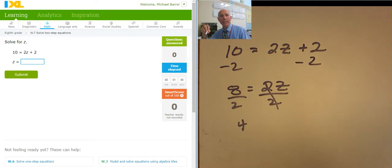What does it mean to be a solution? It means that if you plug it in, it will work. So let's plug it in. 2 times z. 2 times 4 is 8 plus 2 is 10. It equals 10. It worked. The answer is 4. Well done.